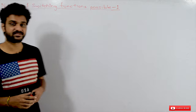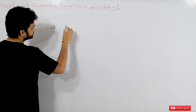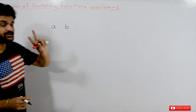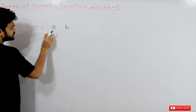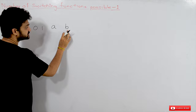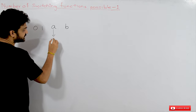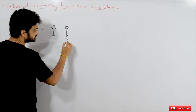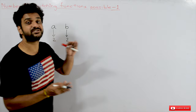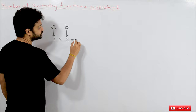To understand this, let's start with an example. If you are given two variables A and B, and these variables are boolean variables, that means each variable is capable of taking two values: 0 or 1. Using these two variables, how many different combinations are possible? It is 2 into 2, which is equal to 4, which can also be represented as 2 power 2.